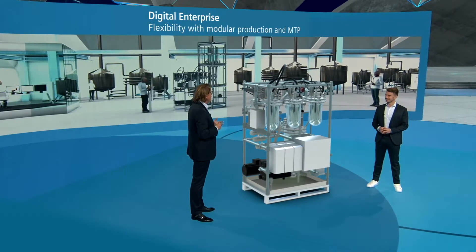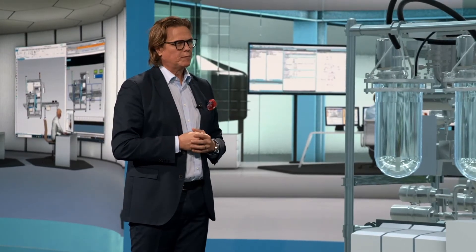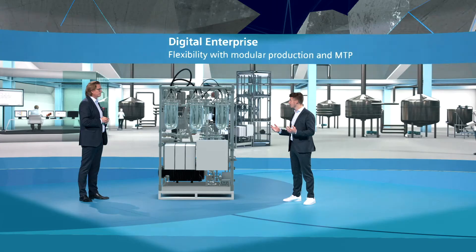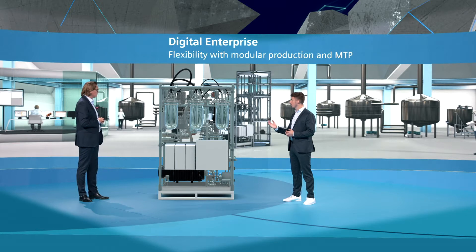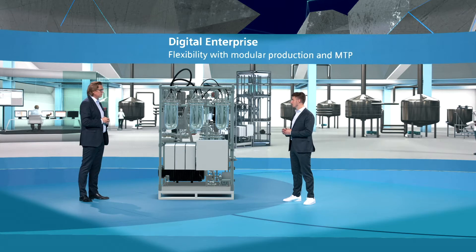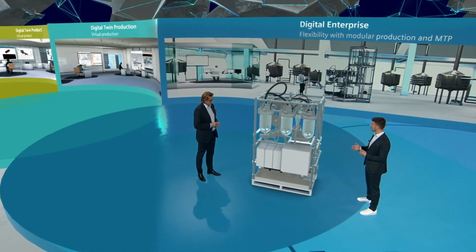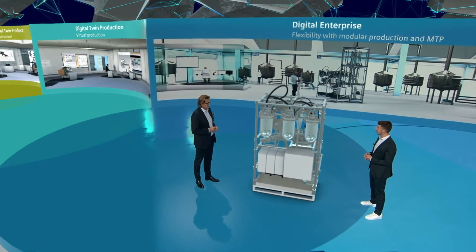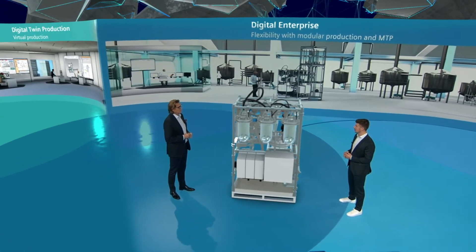Marvin, flexibility in manufacturing — what does that mean to you? Just give me one or maybe two minutes and I will show it to you. This machine here is a pre-treatment module which treats liquids for chemical and pharmaceutical processes. This module is already automated, pre-tested and ready to use in terms of plug and produce. And that's the basis for modular production you've already mentioned.